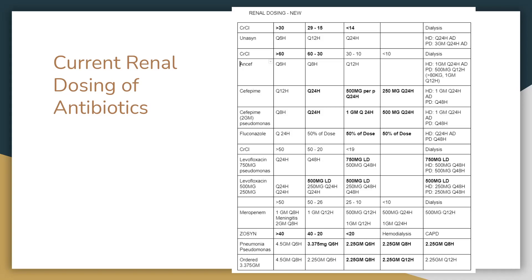And then on the far right category is dialysis. So for hemodialysis, it would be Q24 hours after dialysis. You can kind of go down the list. They're broken up a little bit because some of the drugs have different ranges. That whole second category, all those drugs — mostly the cephalosporins — they kind of use the same creatinine clearance ranges, so they're in a little category.